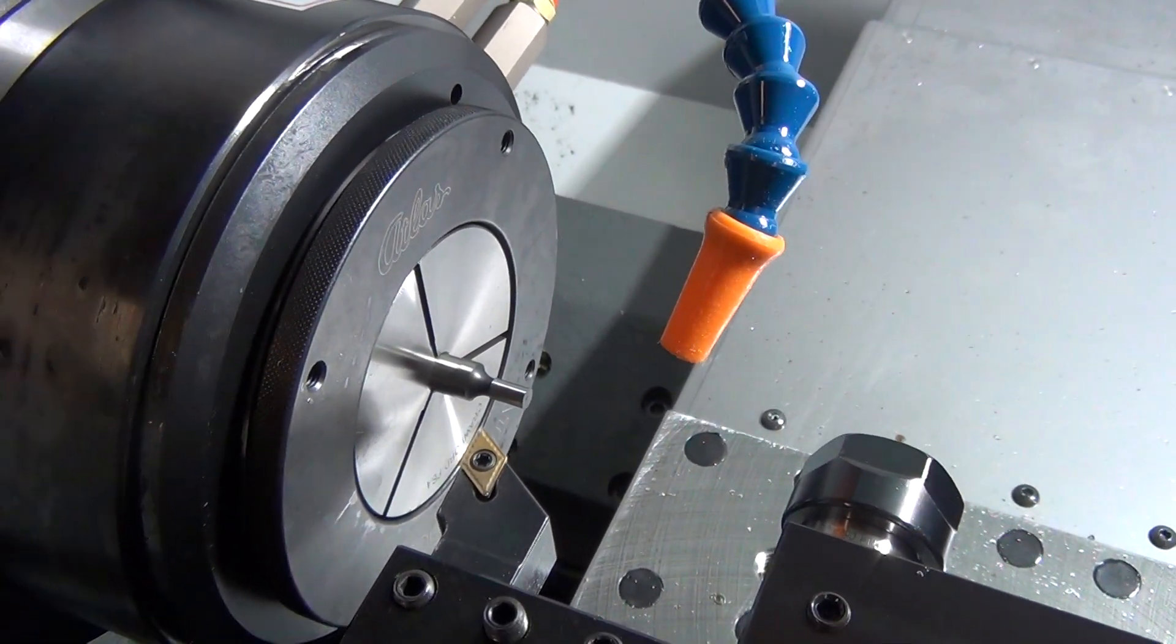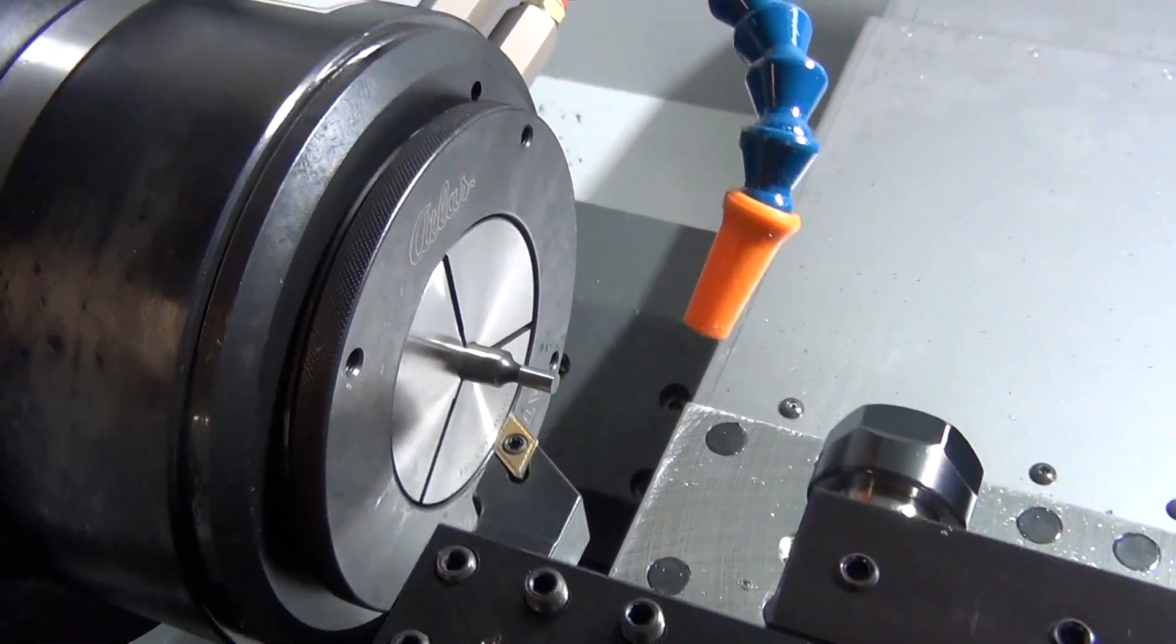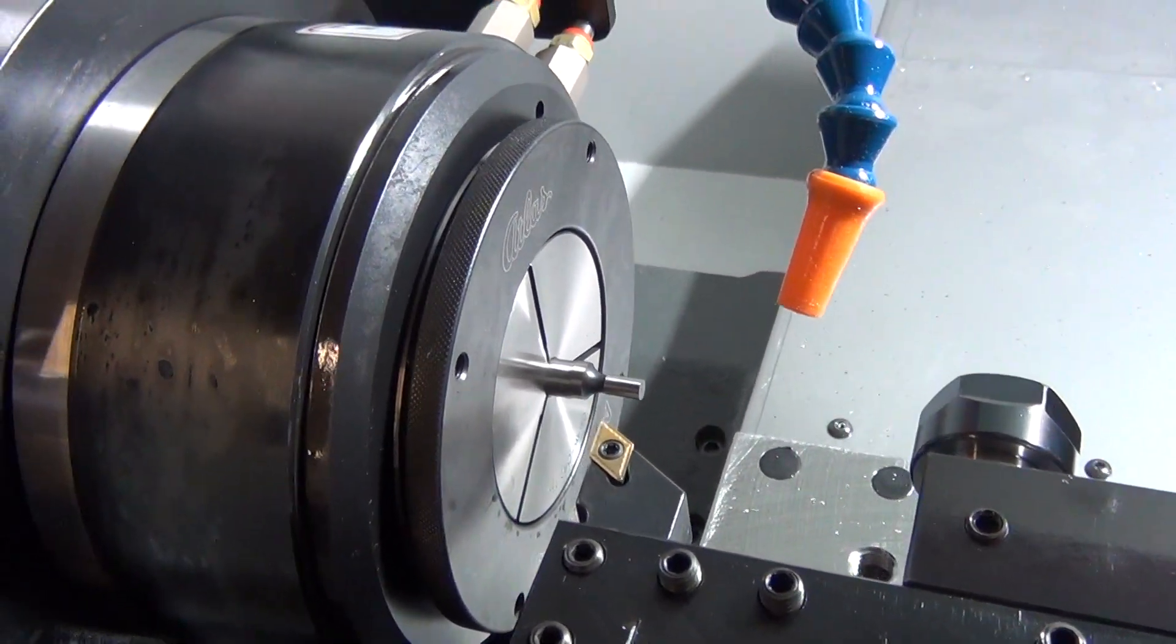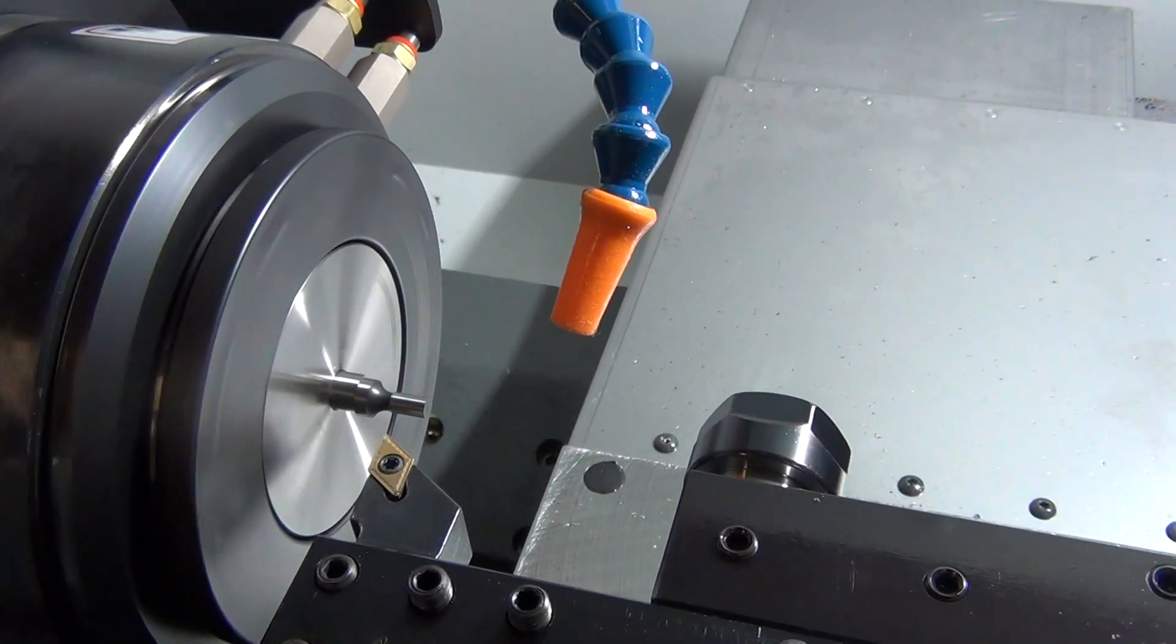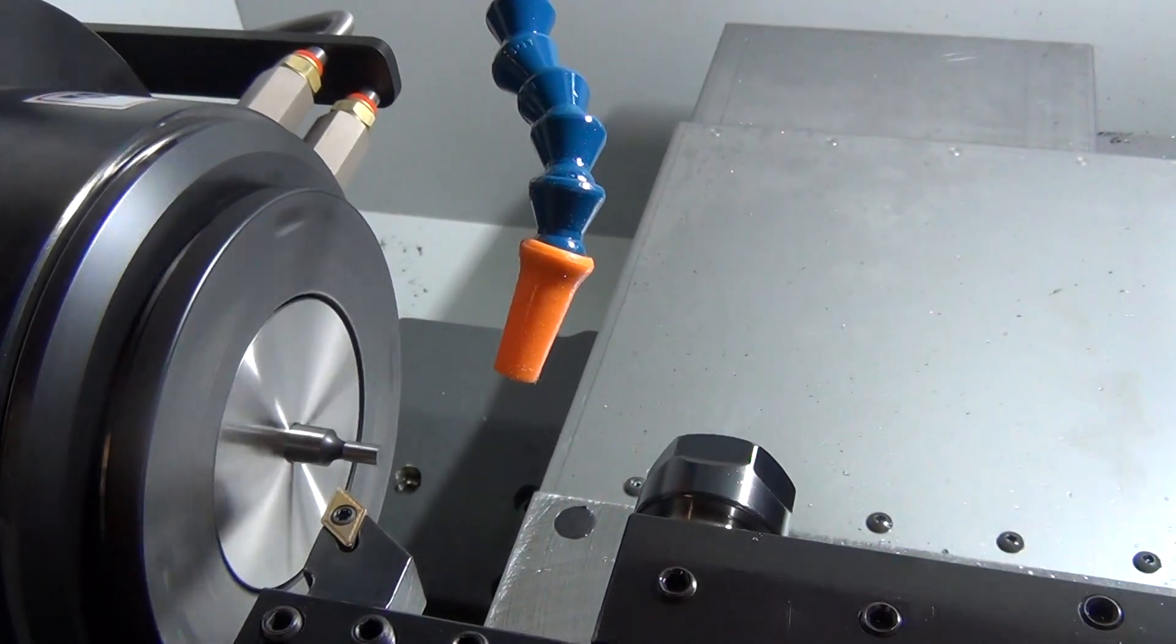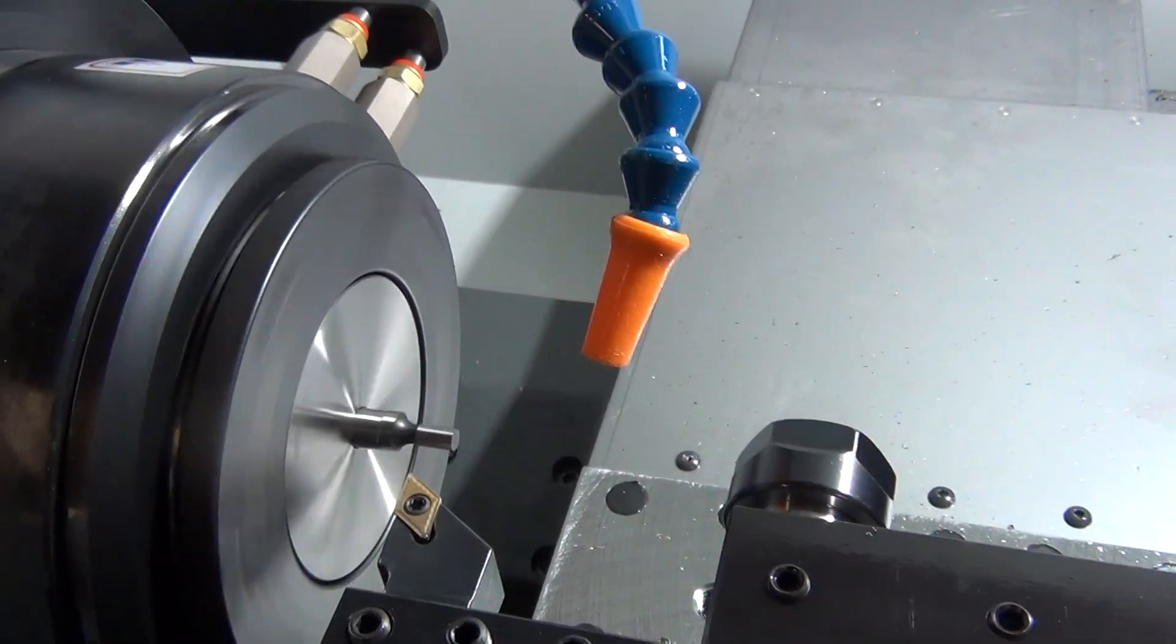So I need to run it in reverse. I've got a little MDI program to start the spindle, but it starts forward first. So I just hit the reverse button and now we're running in reverse.